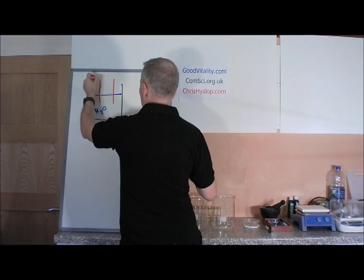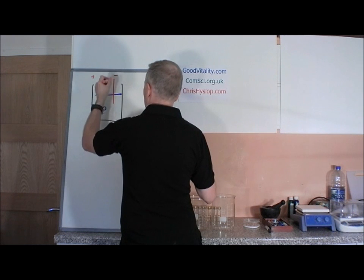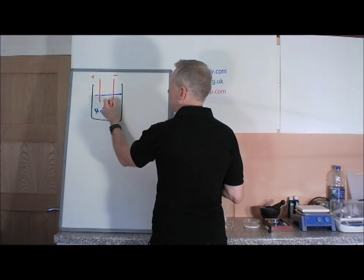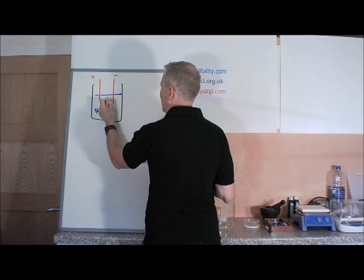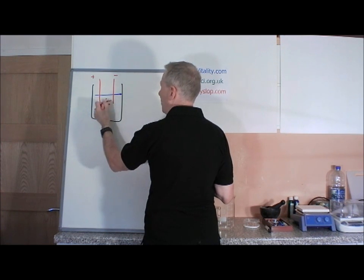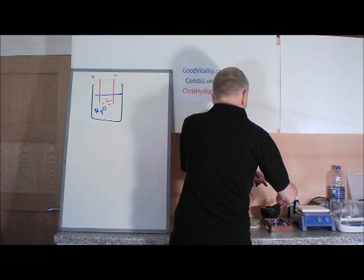And then we pass the current through the electrodes and we hope that we'll get some electrolytic action across the two electrodes and we'll hive off some particles, which I'm going to talk more about in a second, and we'll have lots of ions as well.